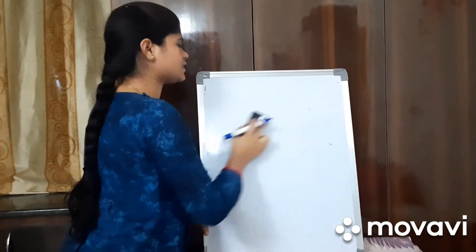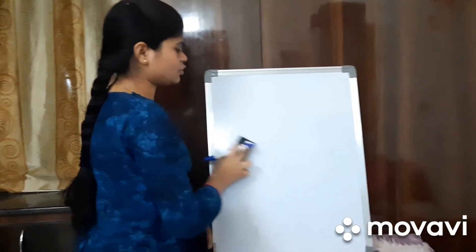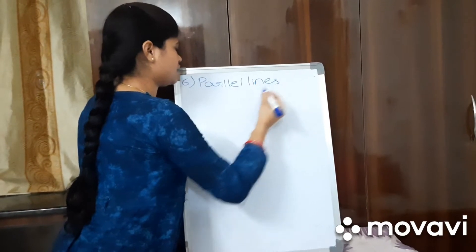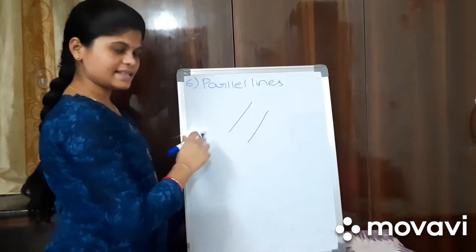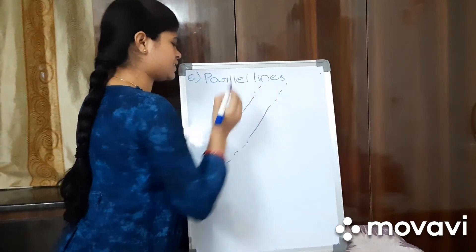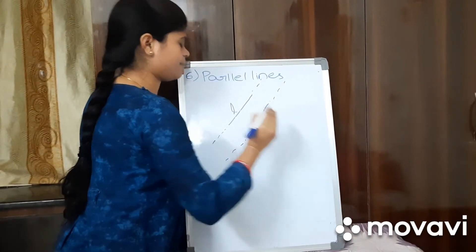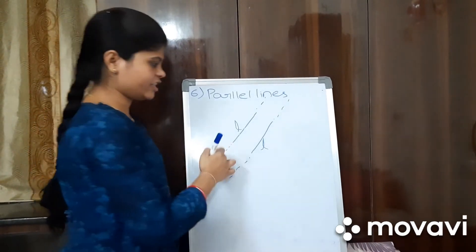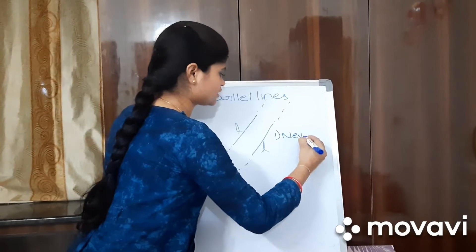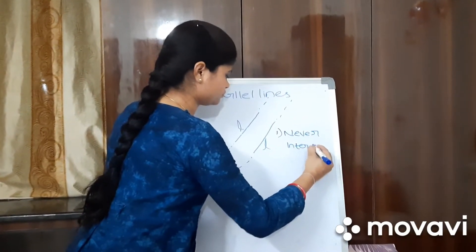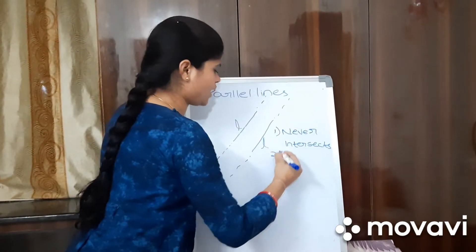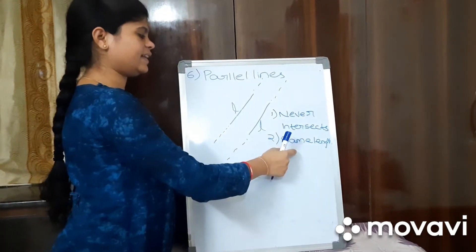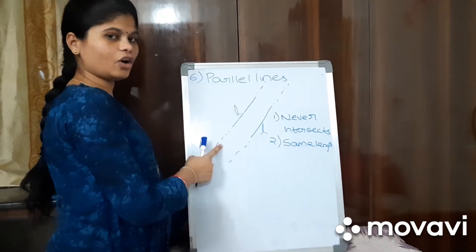The sixth one is parallel lines. Parallel lines have the same length. We can extend these lines on both sides, but the length should remain the same. And these two lines will never intersect. If two lines are intersecting, then we cannot say they are parallel lines. Lines of the same length that never intersect are called parallel lines.